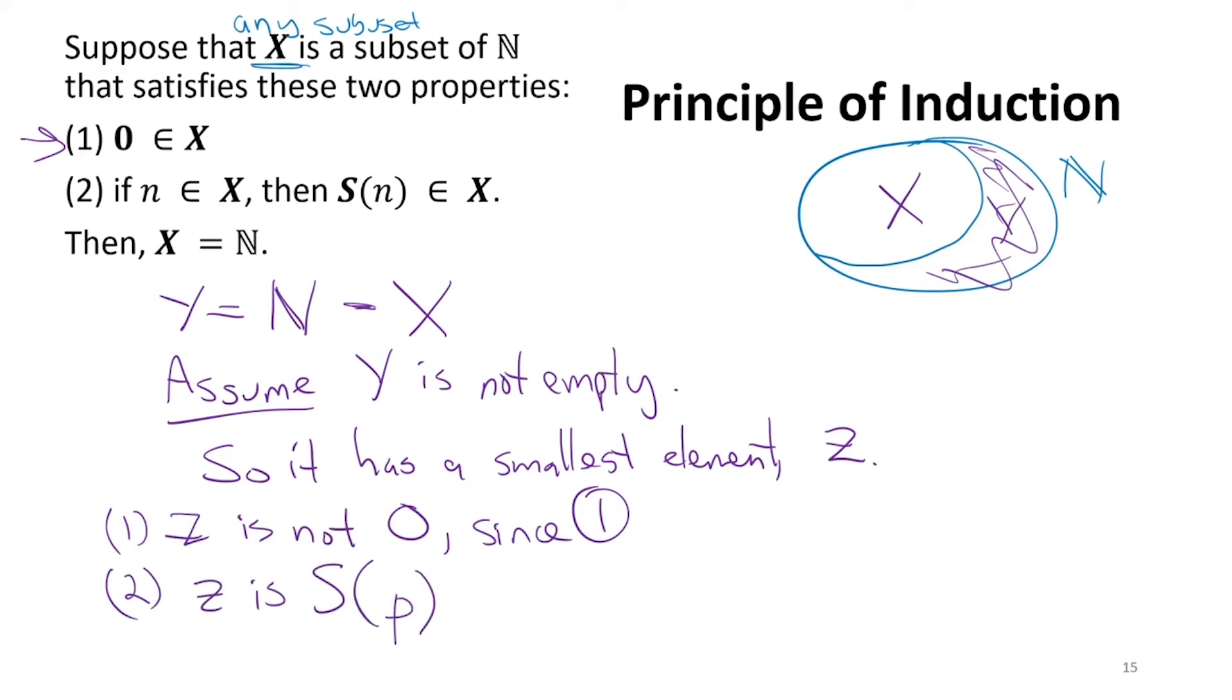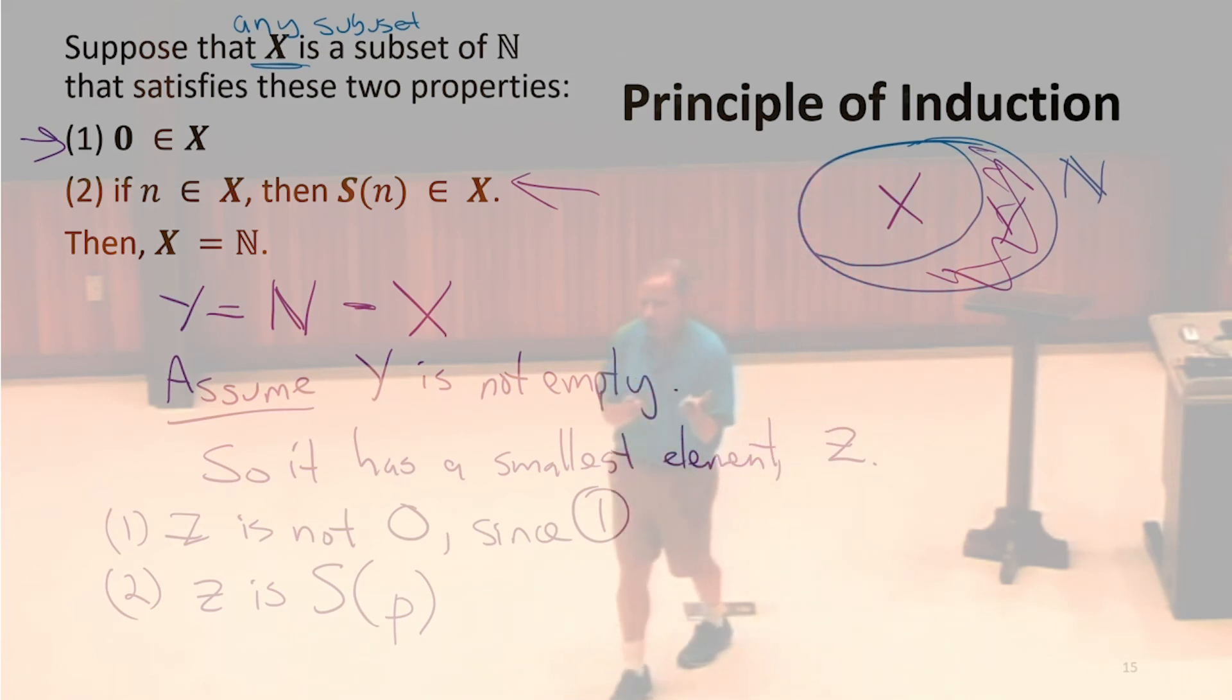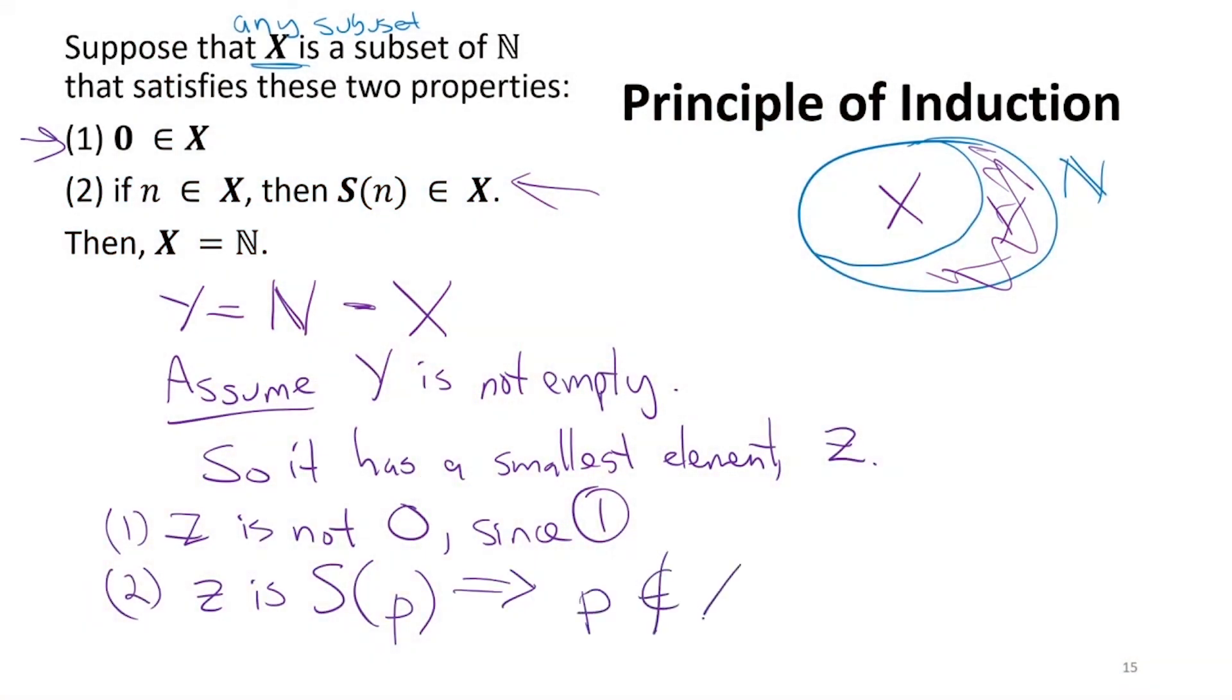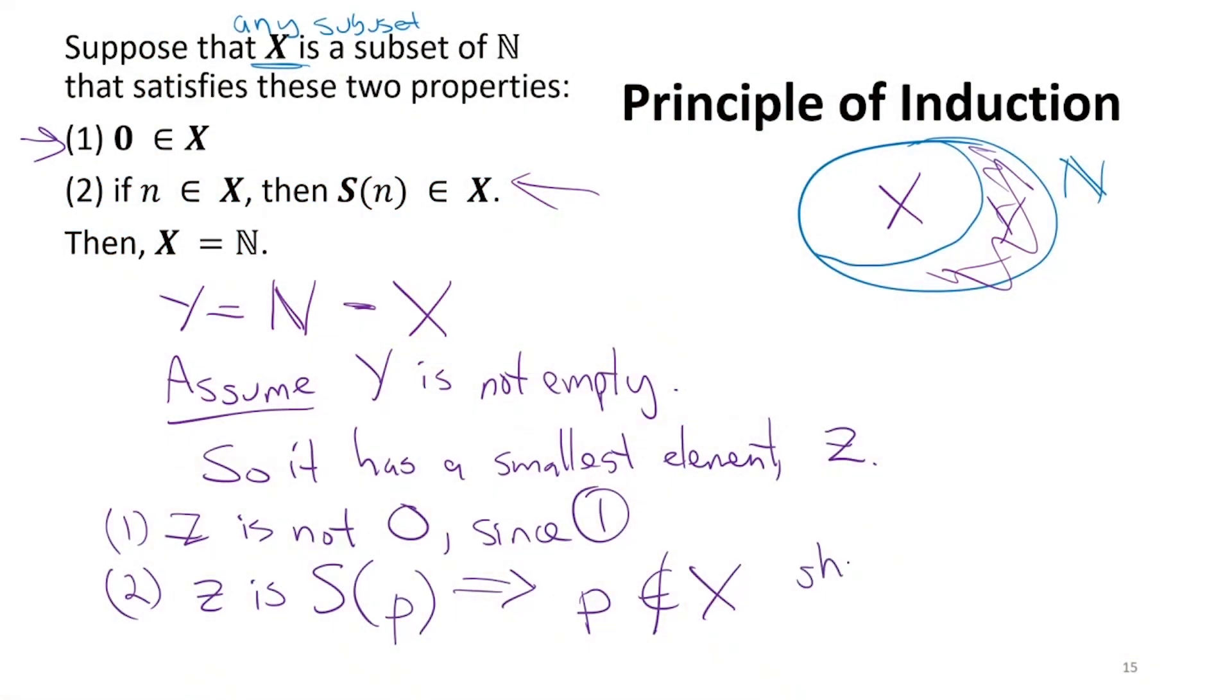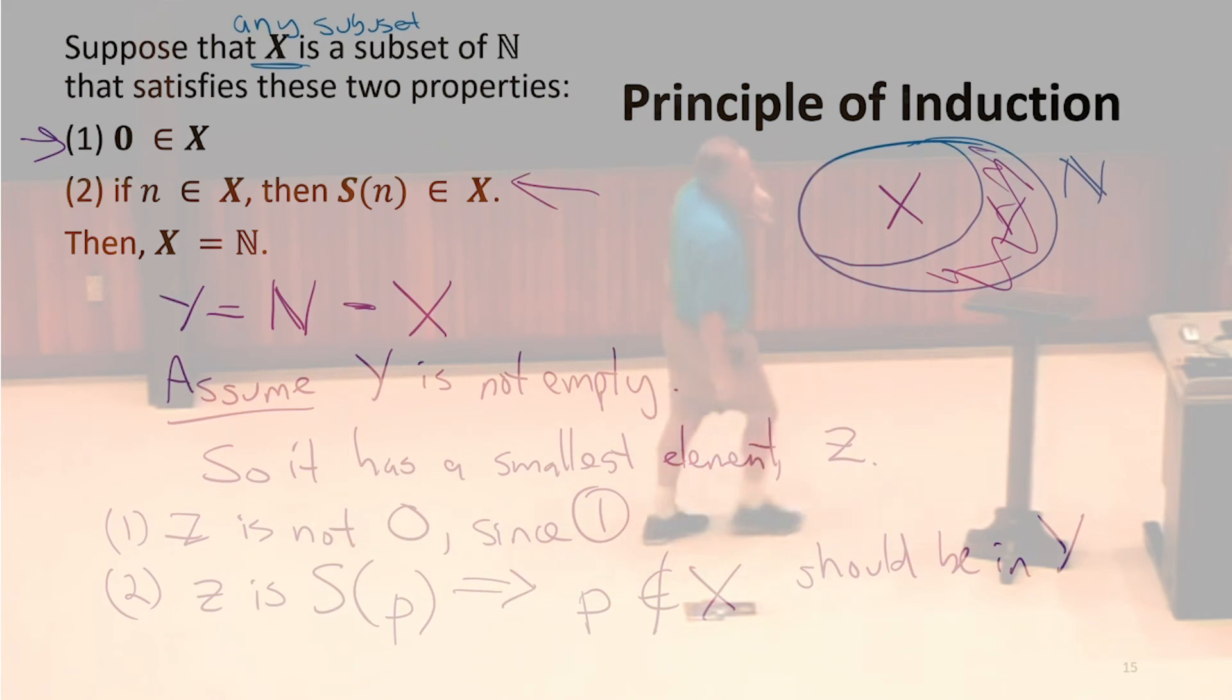What should be the case about that other element? By this rule, if p is in X, what do we know about the successor of p? It is also in X. That means p must not be in X. If p was in X, then z was in X. But we said z was an element of Y, which is the elements not in X. If p is not in X, well, p should have been in Y. But if p was in Y, and z is its successor, well, p is smaller than z. Of course, we didn't define smaller, but intuitively, I hope you get that the successor is bigger than the thing that it's succeeding. So that means p should have been in Y, but p is less than z. So we have our contradiction.